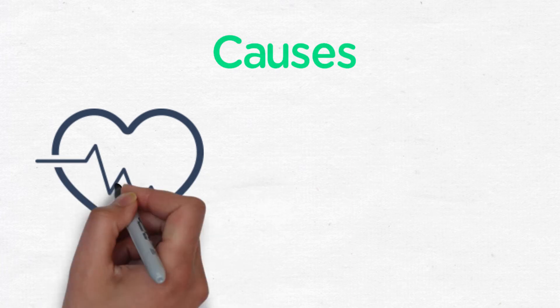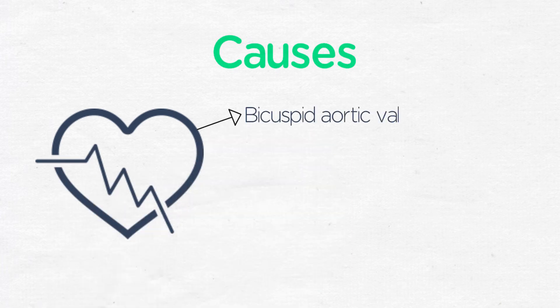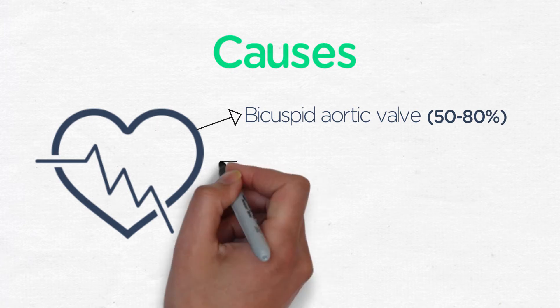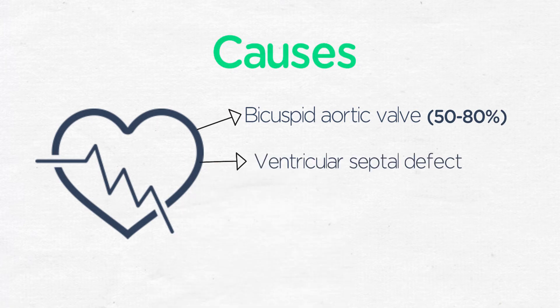Coarctation is commonly associated with a bicuspid aortic valve in up to 50 to 80% of cases, as well as a ventricular septal defect. When one sees obstruction in a coarctation, one must always be on the lookout for other locations of left heart obstruction — for example, mitral valve disease, aortic valve disease, or even more diffuse arch hypoplasia.